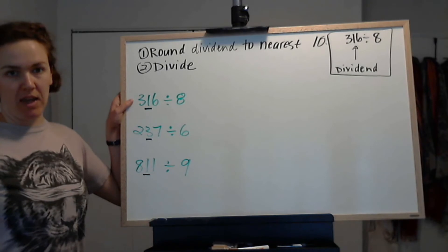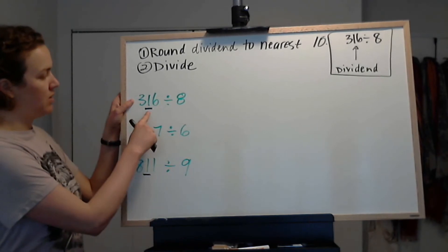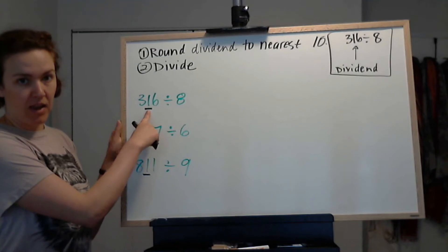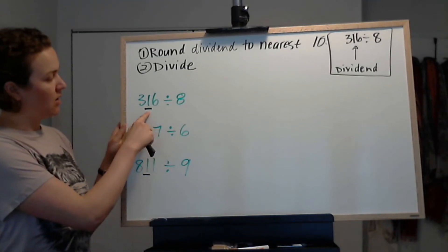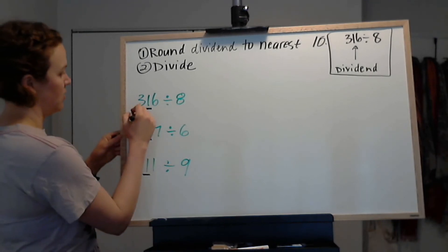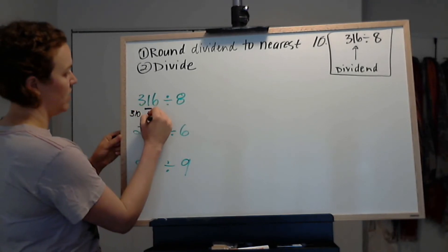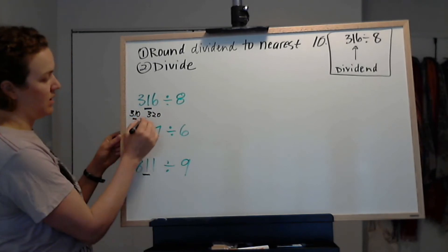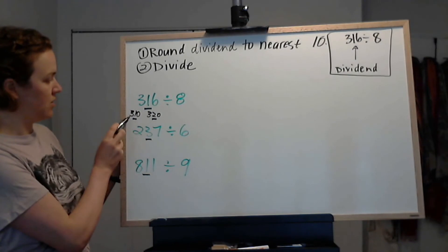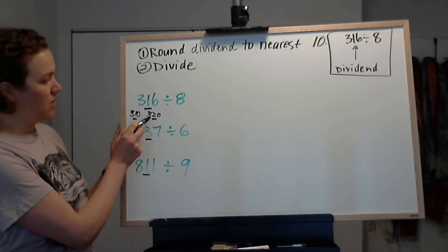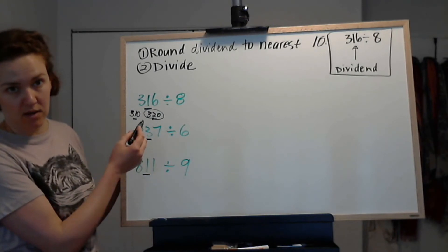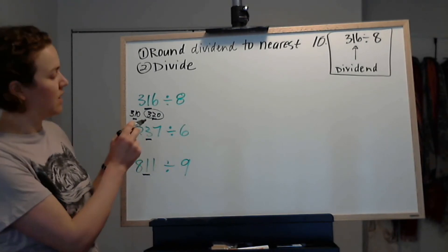First, 316 divided by 8. We round to the nearest 10, so the 10 is our key digit, and what we're asking ourselves is, is this number closer to 310 or 320? Well, it's only 4 away from 320, so rounding to the nearest 10 gives us 320.